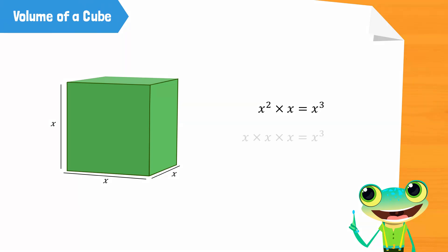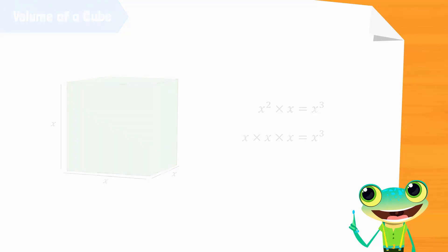This means that 3 measures of the same length are multiplied. Just like the square, this is possible for any number.